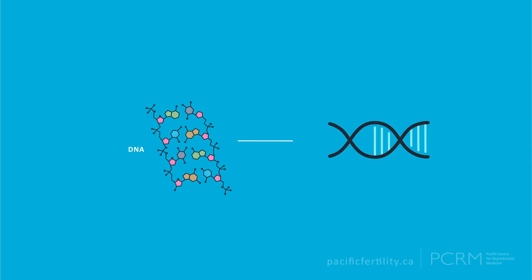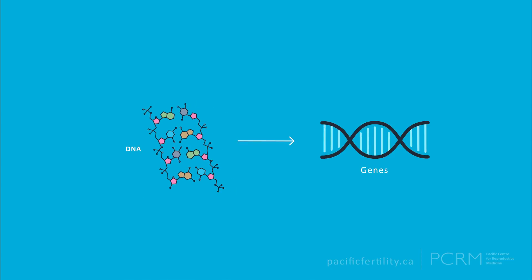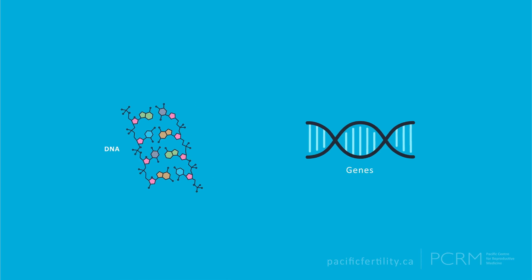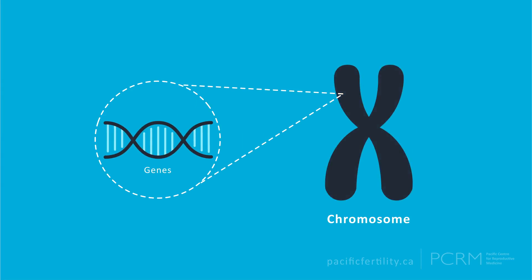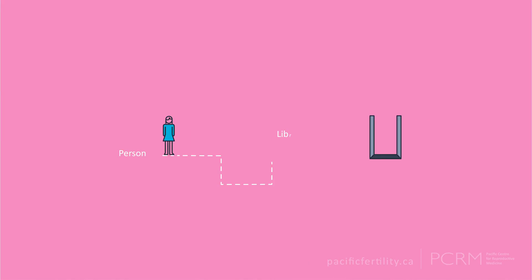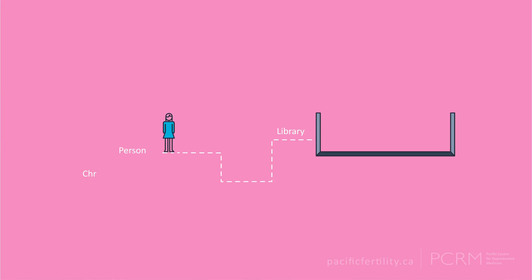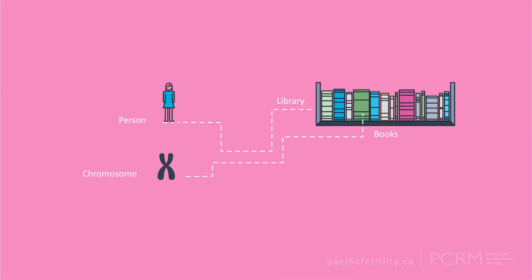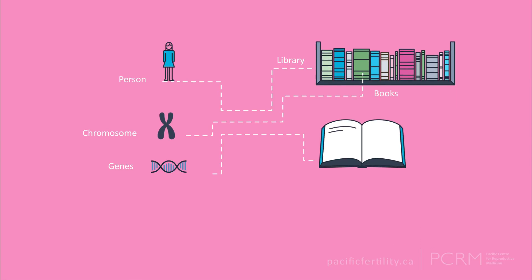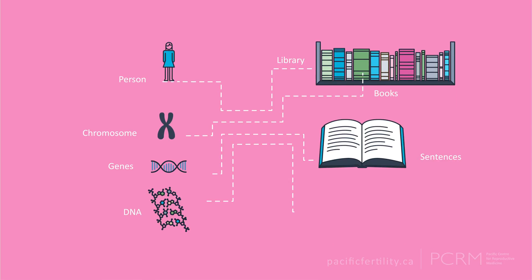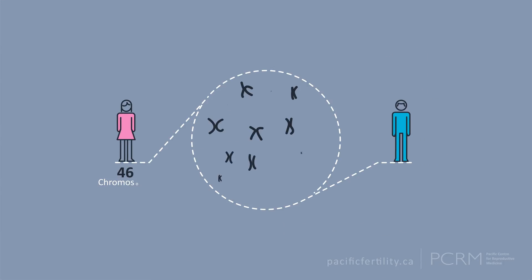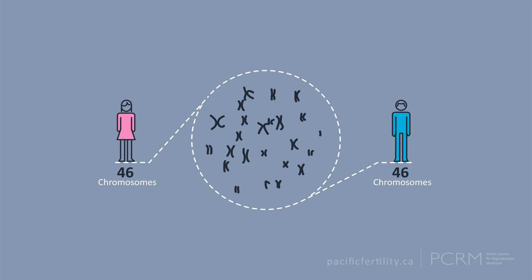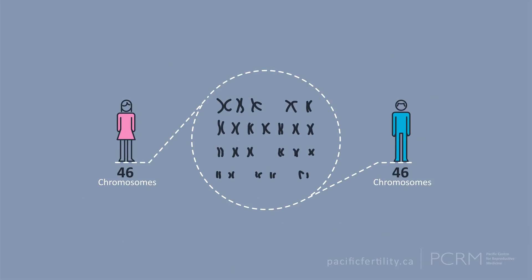DNA is organized into genes, and genes are packaged into larger structures called chromosomes. If you think of each person as a library, the chromosomes are the books that make up the library, genes are the sentences within the books, and DNA is the individual letters. Each of us typically has 46 chromosomes arranged into 23 pairs, termed euploid.